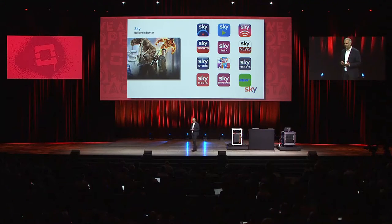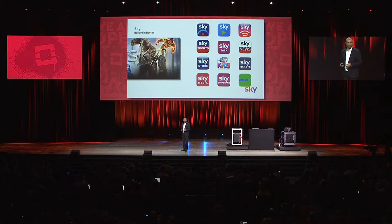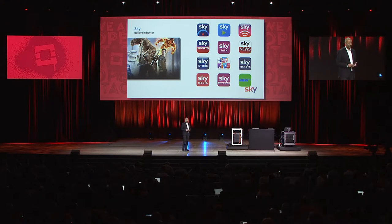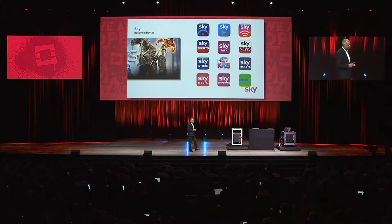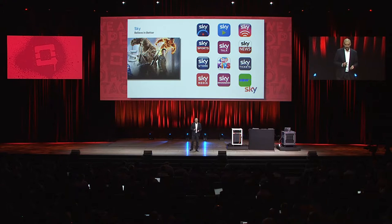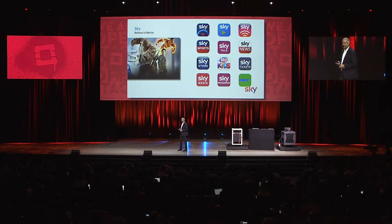Sky is Europe's leading entertainment company, with about 30,000 employees across the UK, Germany and Italy. We have something like 22 million subscribers, and we're primarily a satellite television company. In the UK we deliver something over 600 TV channels direct to our customers' homes. We've got lots of different products and businesses — we're also a telco, an internet service provider. We have a product called Sky Talk, which is landline telephony, and Sky Broadband, which delivers DSL and fiber broadband to our customers' homes.